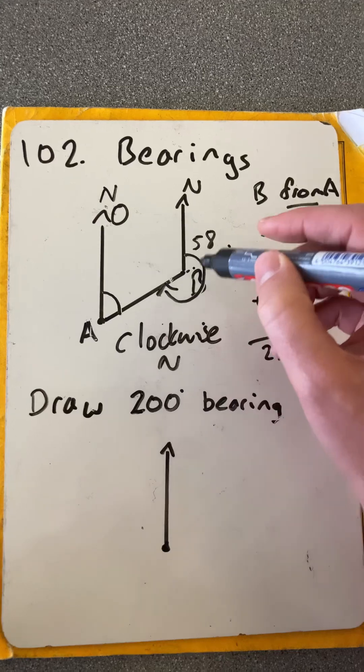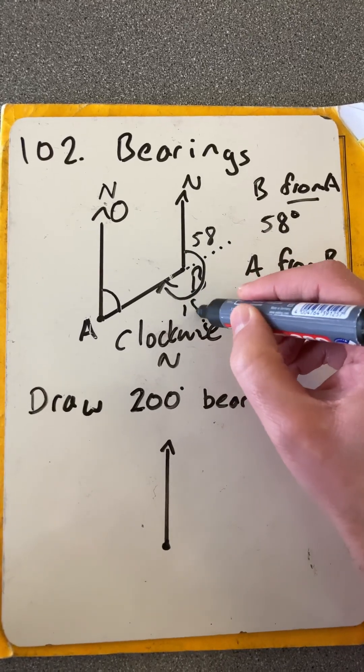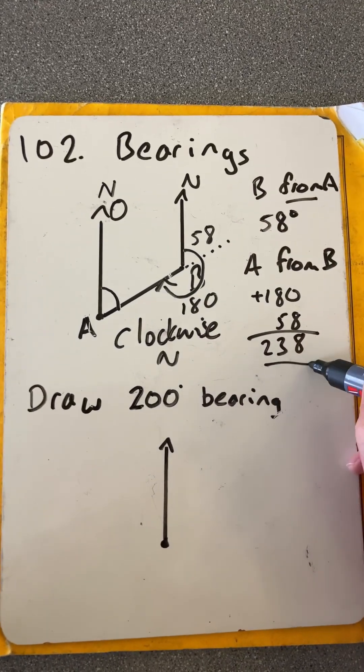And we'll go that way around, 58 plus 180. Get a bearing of 238.